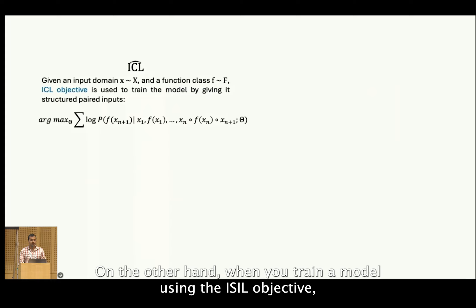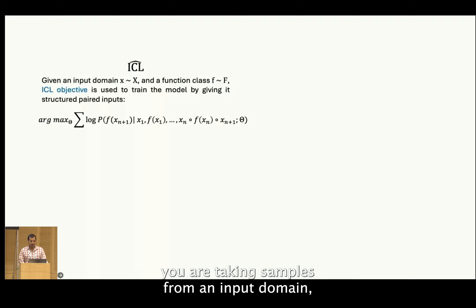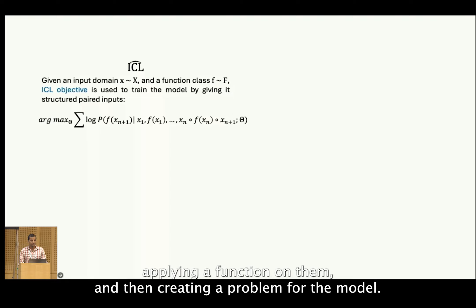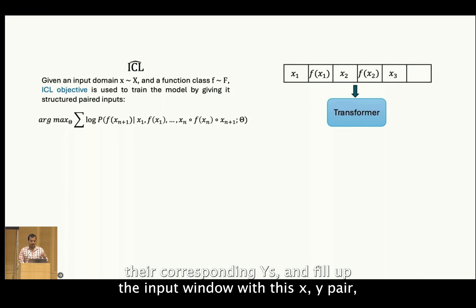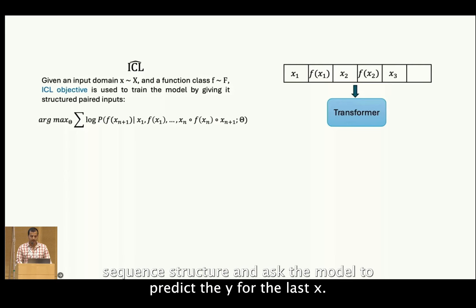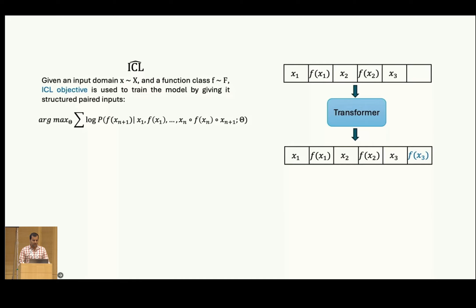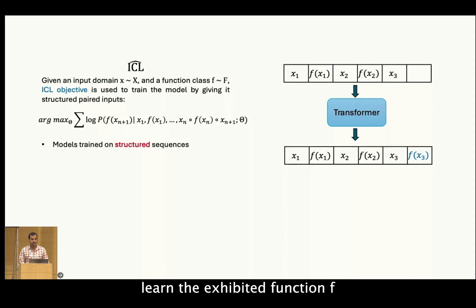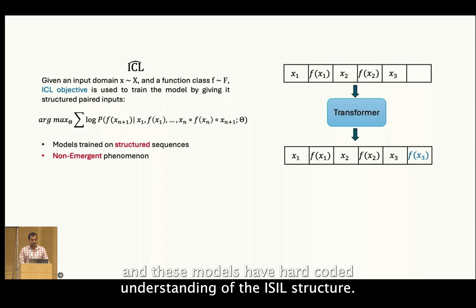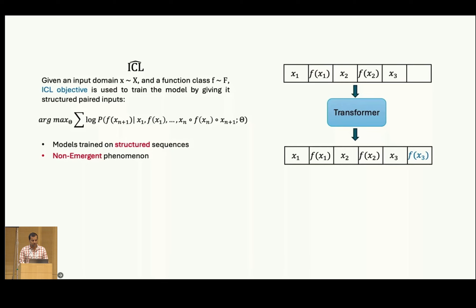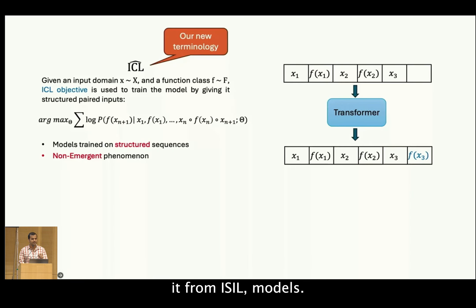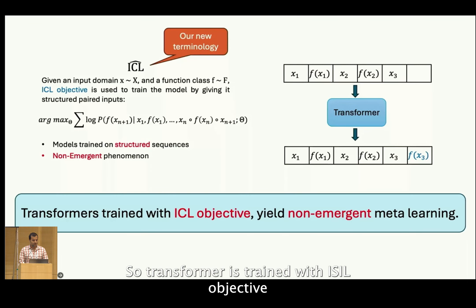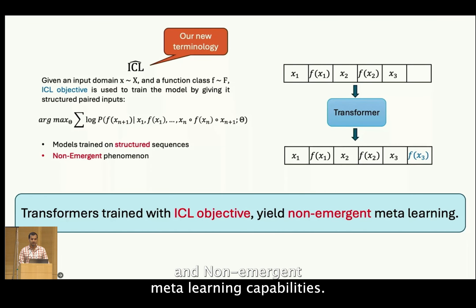On the other hand, when you train a model using the ICL objective, you are taking samples from an input domain, applying a function on them, and creating a prompt for the model. In other words, you take some Xs, their corresponding Ys, and fill up the input window with this X-Y pair sequence structure, and ask the model to predict the Y for the last X. This trains the model to always expect this structure in the input, and hence it learns to meta-learn the exhibited function F. But this is not an emergent phenomenon — these models have hard-coded understanding of the ICL structure, and that's why they are incomparable to LLMs. We call this space of models ICL-hat to distinguish it from ICL models. Transformers trained with the ICL objective yield non-emergent meta-learning capabilities. Therefore, emergent ICL is not the same phenomenon as the artificial ICL-hat.